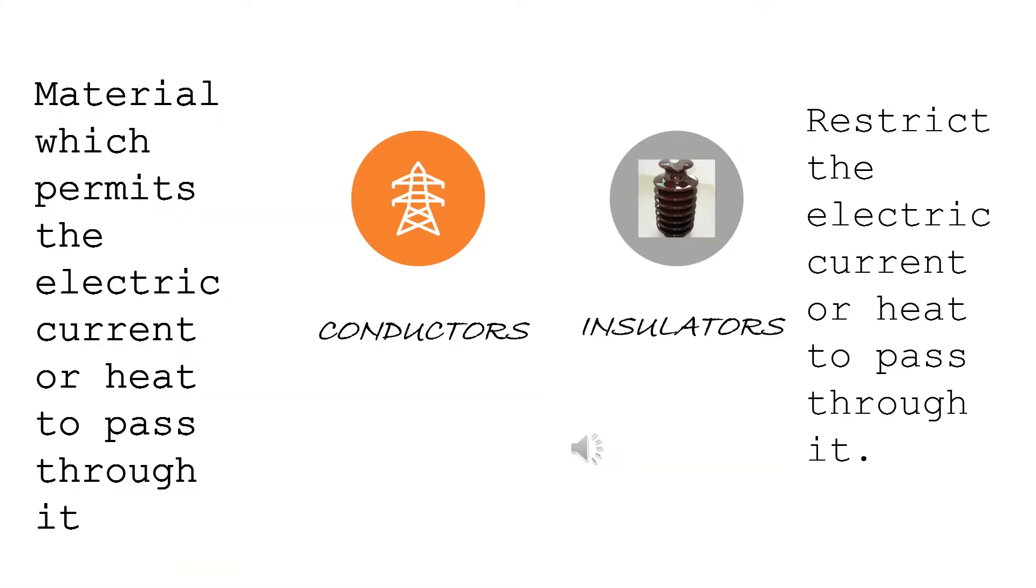Conductors and insulators. The material which allow the electric current or heat to pass through that material we call it as a conductor. The opposite of that is an insulator that resists the electric current or heat to pass through it.